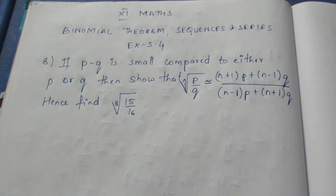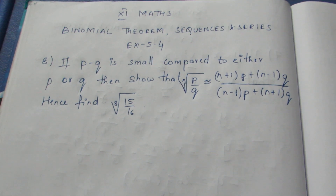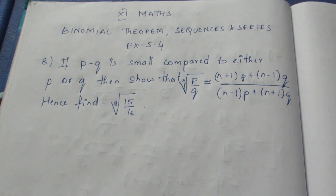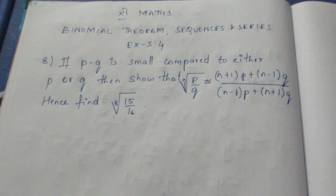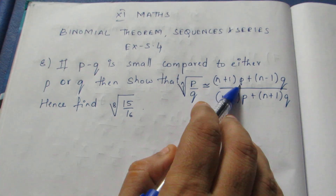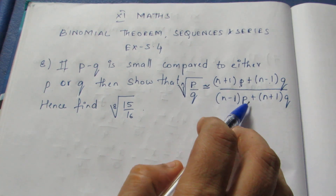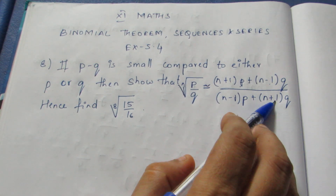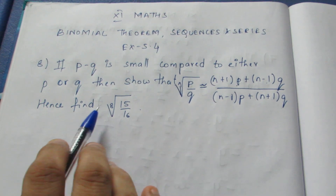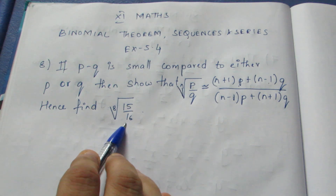The question states: if p minus q is small compared to either p or q, then show that the nth root of p by q is approximately equal to (n plus 1) into p plus (n minus 1) into q, divided by (n minus 1) into p plus (n plus 1) into q. Hence find the 8th root of 15 by 16.